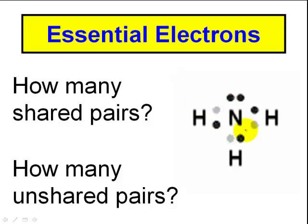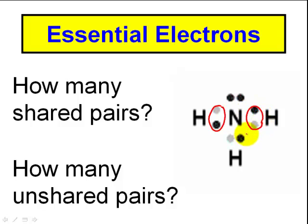For the central atom, I'm referring to nitrogen. Around nitrogen, how many shared electron pairs do I have? A pair is two electrons. This is a shared pair — it's being shared with hydrogen, and that is a covalent bond. So when I ask how many shared pairs, I'm really asking how many covalent bonds do you have? You have three single covalent bonds.